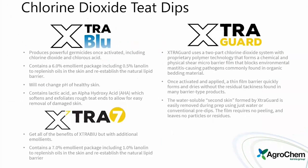Our chlorine dioxide t-tip line includes Extra Blue, Extra Guard, and Extra Seven — all powerful germicides. Extra Blue has a 6% emollient package with lanolin. Extra Seven has all the benefits of Extra Blue with additional emollients. Extra Guard is our barrier product with a thin film barrier that provides a quick dry even for a barrier product, without residual tackiness, forming a second skin.